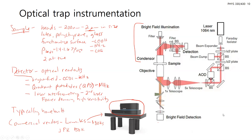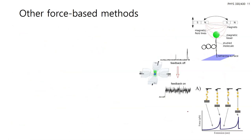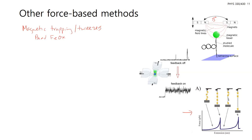Aside from optical traps, other force-based methods include magnetic trapping or magnetic tweezers, where the bead is doped with iron oxide and a magnetic field tracks the bead. Similarly to optical traps, you can have your molecule fixed to a surface and pull it. Magnetic trapping is more challenging to multiplex since it's difficult to disperse multiple magnetic fields.